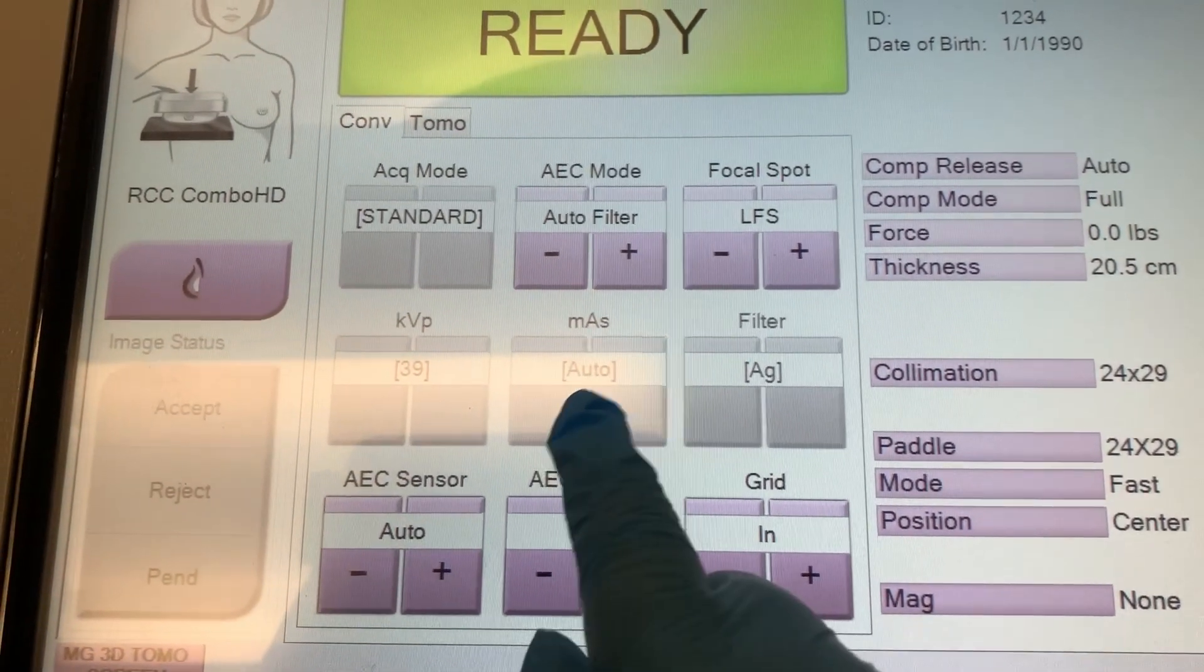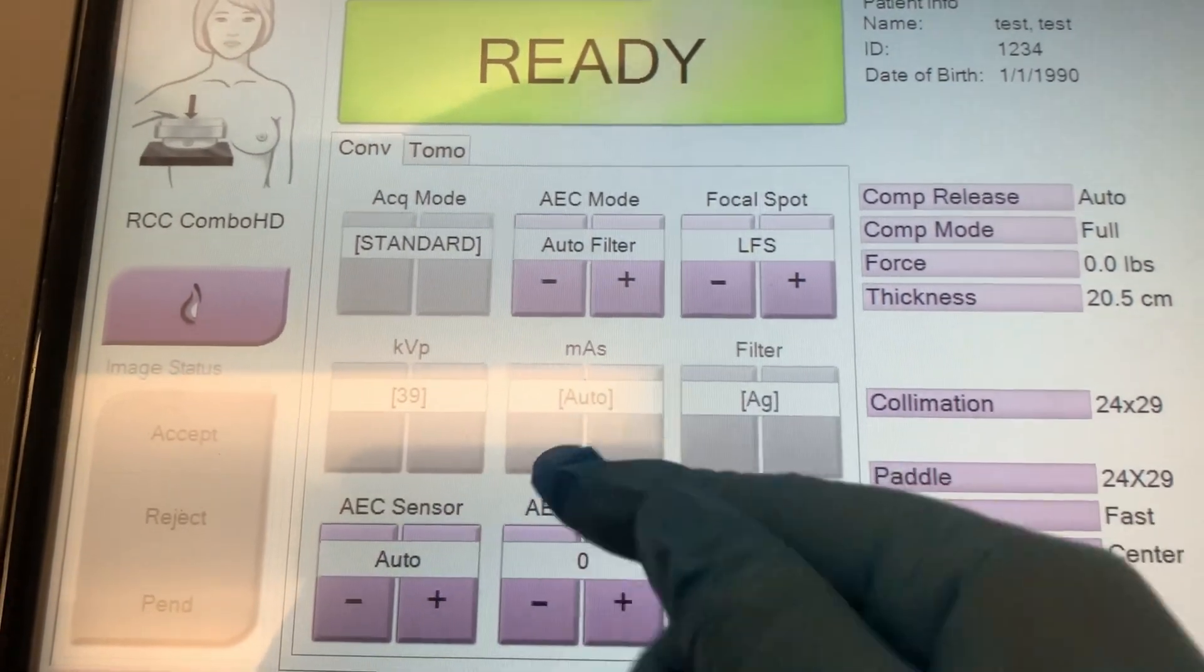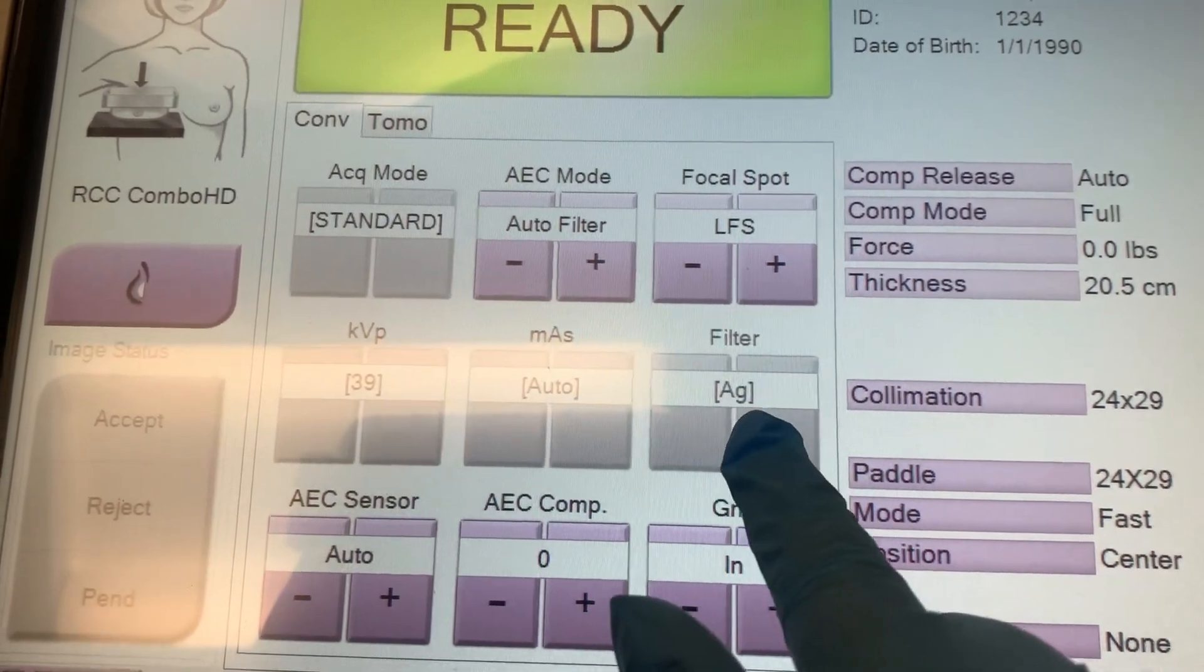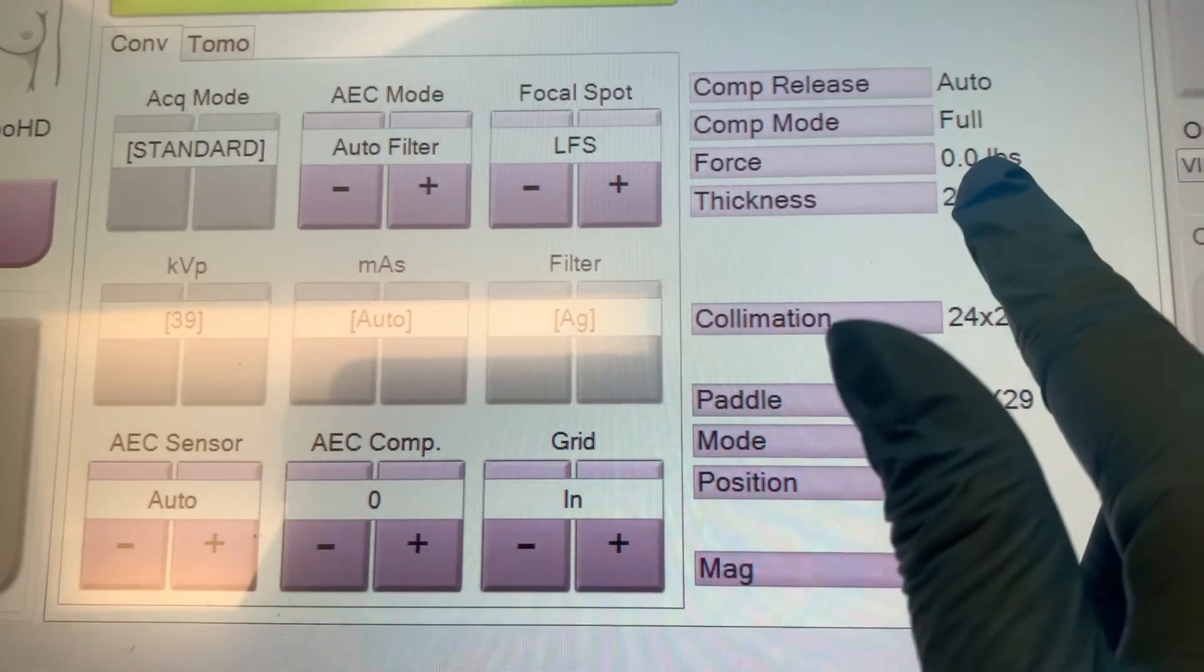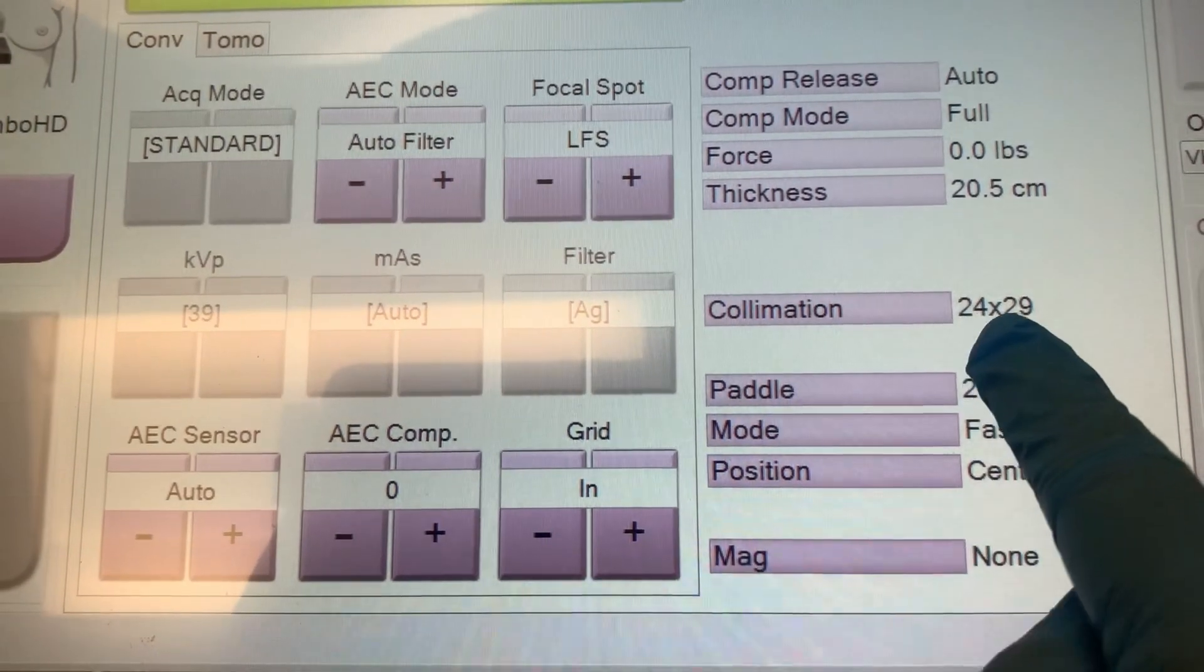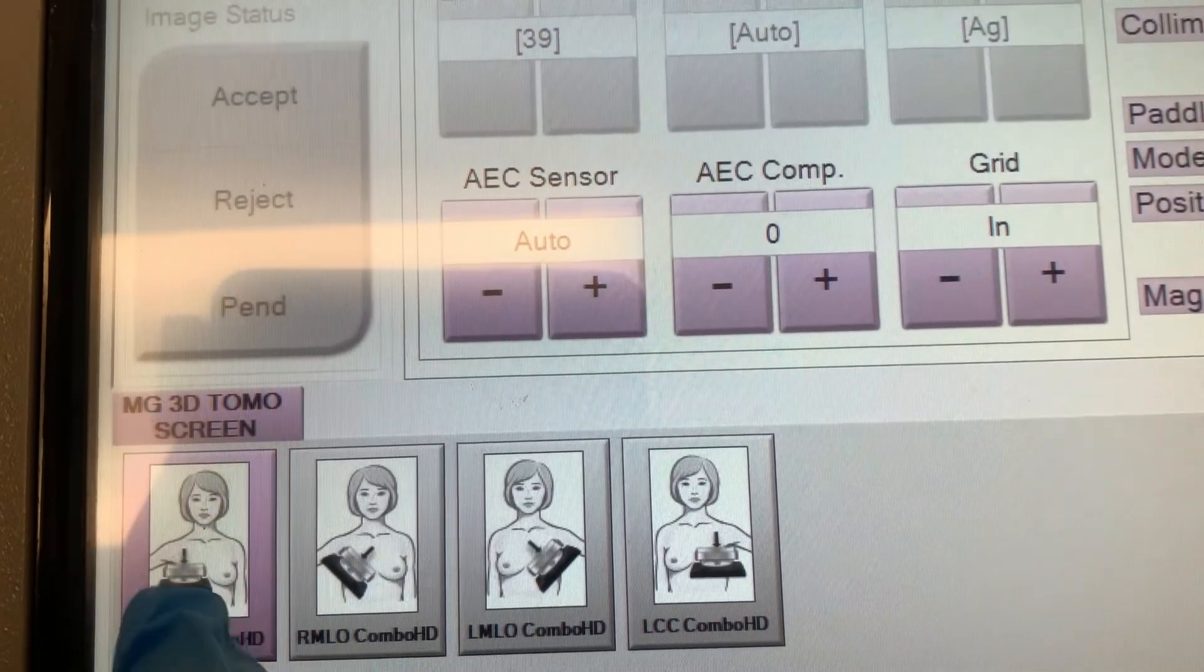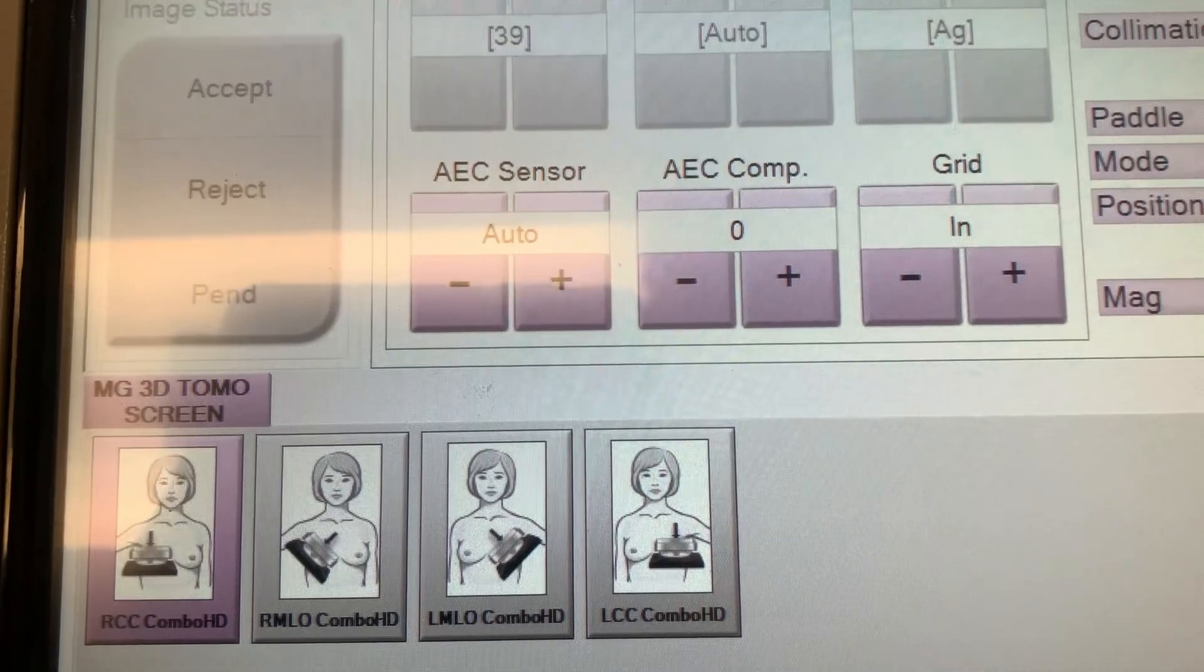But the mAs is set to just AEC. So it will automatically adjust the mAs with this setting. And then for your filter, you can see it right here. And then this is how many pounds you're giving the patient, how thick the breast is, what paddle size you have. And the paddle size right here is showing what paddle size the collimation is set at. Then right here, you see your different pictures that you have to do.